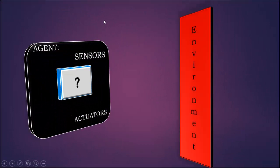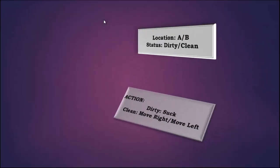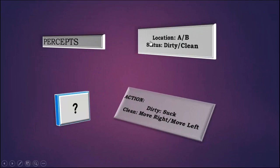This is the model for the Simple Reflex Agent. We have the percept for the Vacuum Cleaner Agent: Location and Environment Status. Either the location of the agent is Square A or B, and the Environment Status is either Dirty or Clean. The agent program takes the percept and gives the decision in terms of actions: move right, move left, or suck up the dirt.